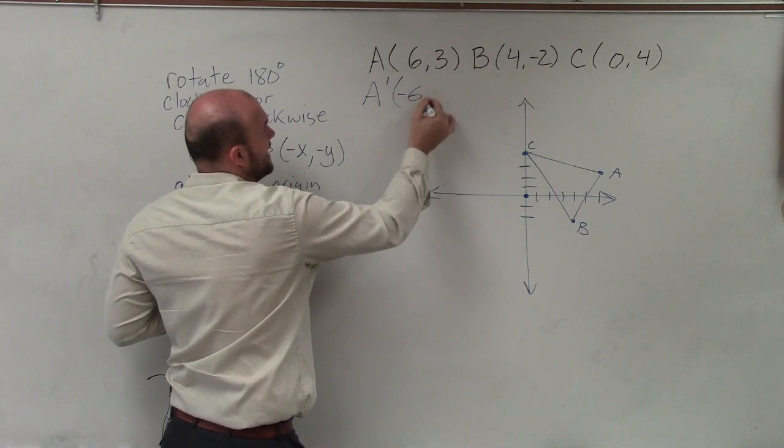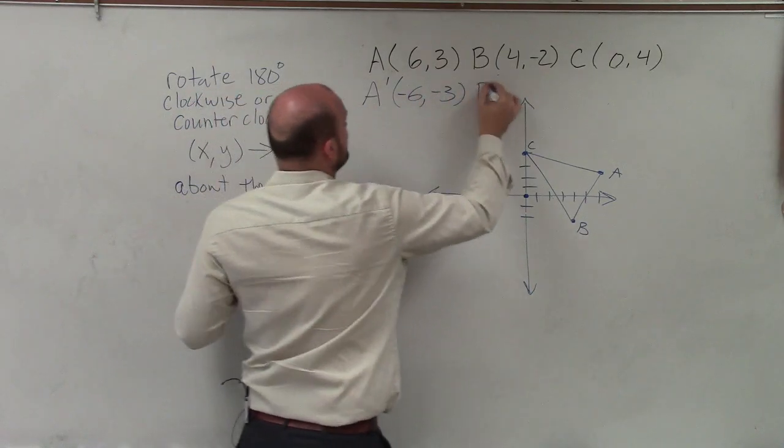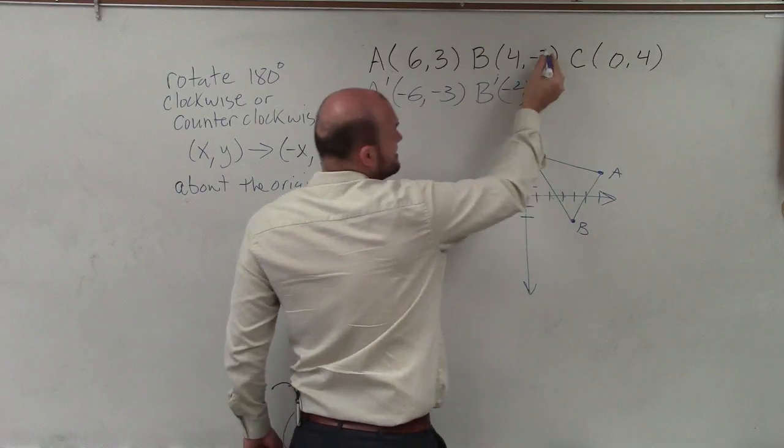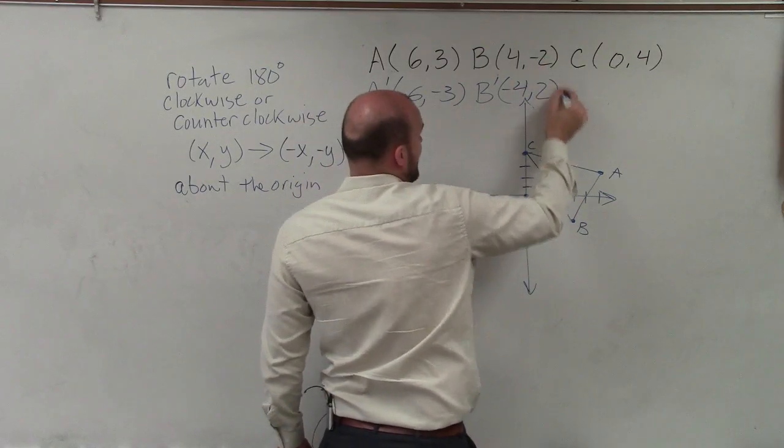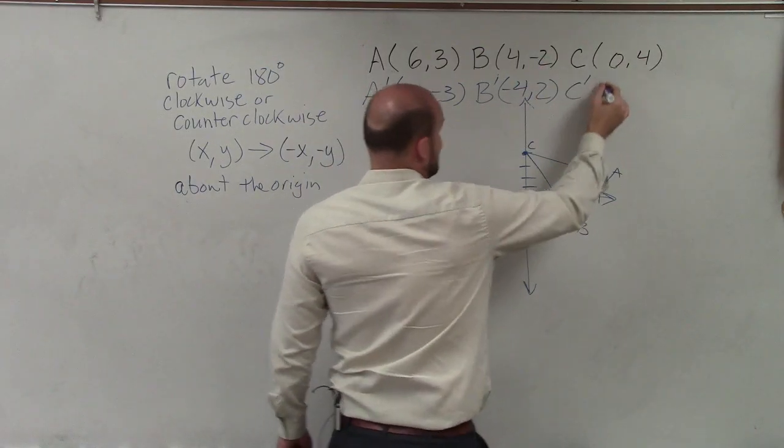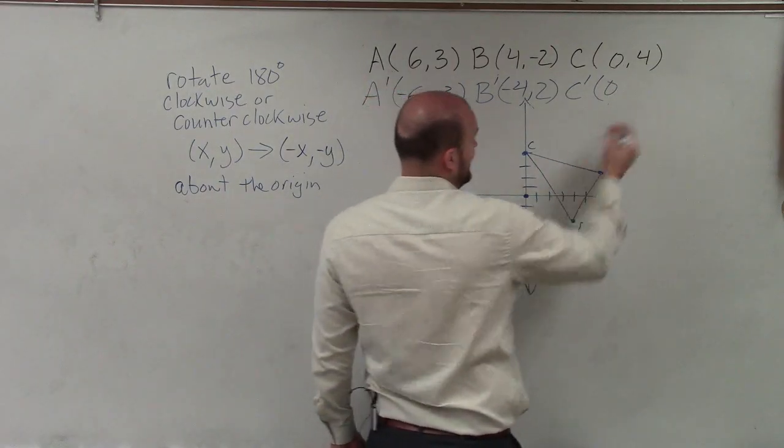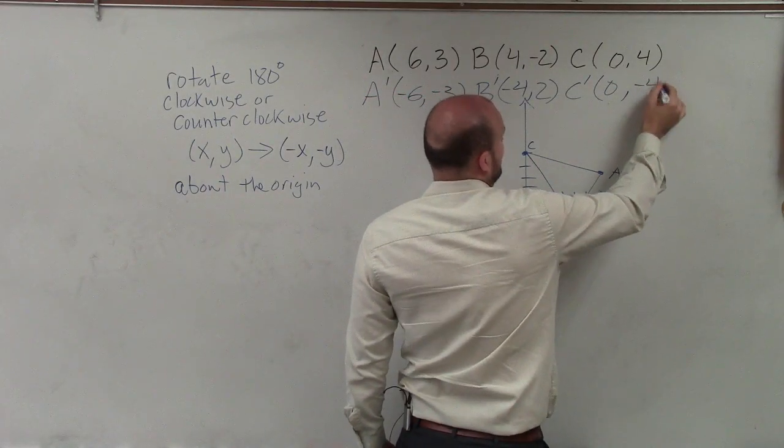So now my new image is A prime, which is going to be now negative 6, negative 3. B prime is the honor of going to be negative 4. And since 2 is already negative, it's going to be a positive 2. And C prime, 0 is not positive or negative, so we can't negate it. And that's going to then negative 4.